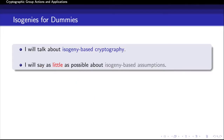As you might have guessed, this talk is going to be on isogeny-based cryptography, but I'm going to try my best to say as little as possible about isogeny-based assumptions. In fact, the main purpose of this work is to provide the railroad for non-isogeny people like me to build cryptographic applications from isogeny-based assumptions. Bear with me for 20 minutes or so, and you will see how easily you can build crypto applications from isogeny-based assumptions.